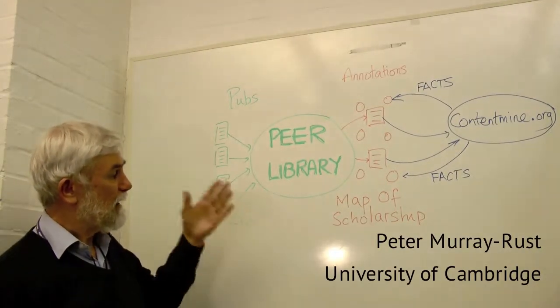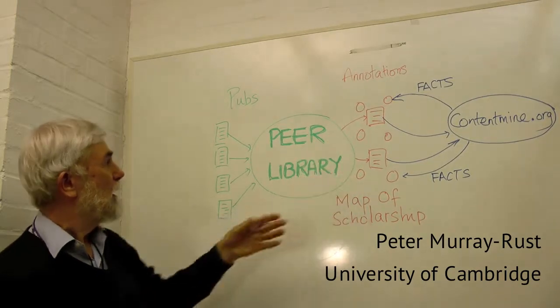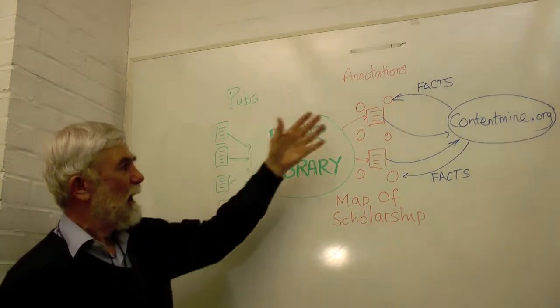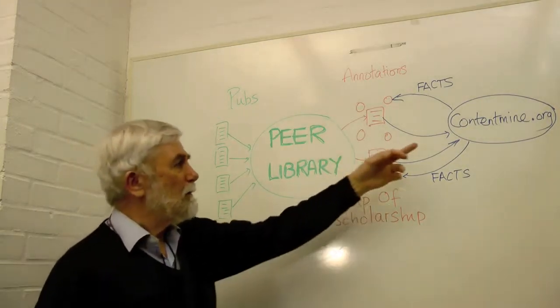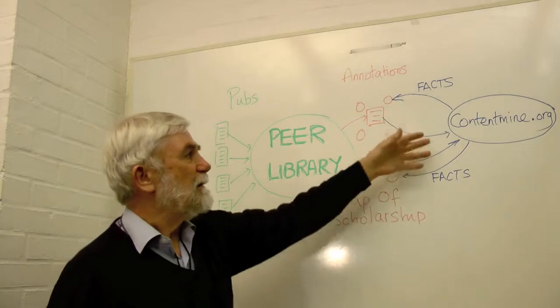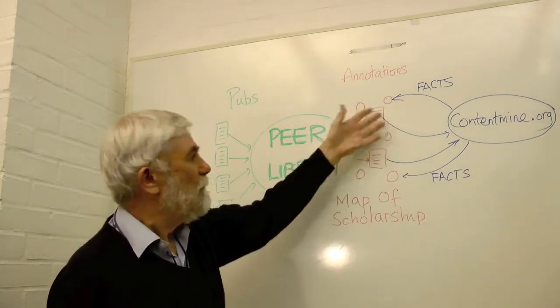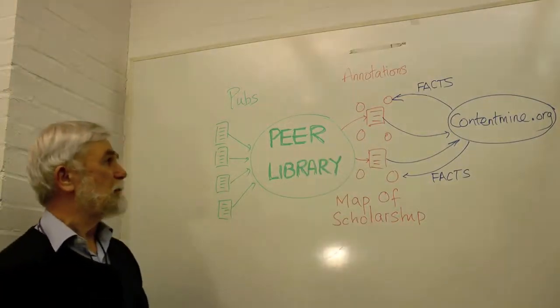Many people are excited about Peer Library — they can't wait to start using it in their classes, research groups, and reading clubs. Peer Library is going to produce a unique part of scholarship: a map of the papers in the literature annotated by the community. In ContentMind, we're going to take all of these papers and automatically extract the facts from them and put them back into Peer Library. There are plenty of online community participants eager and willing to share their insights on academic scholarly literature, and we don't really have a good venue to do so — we don't have a commons, a pool for that content.